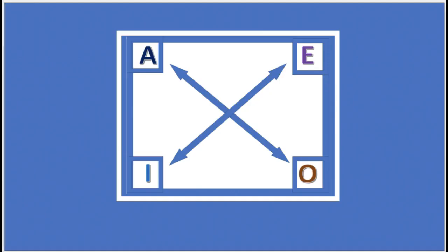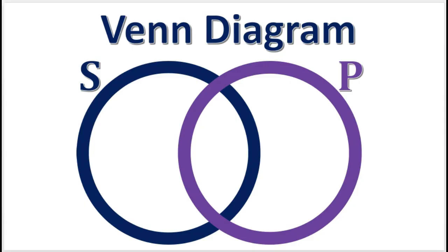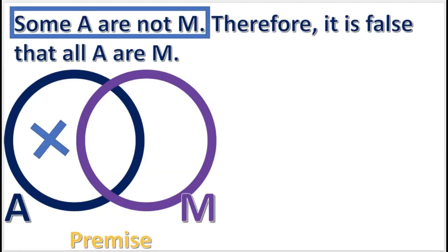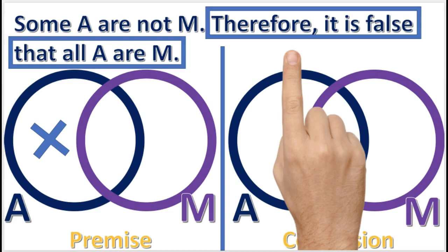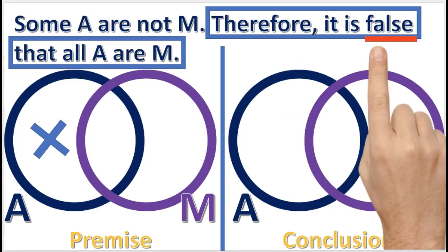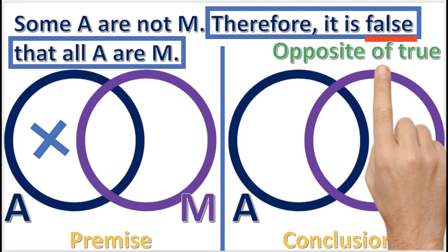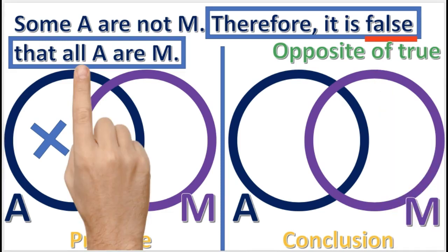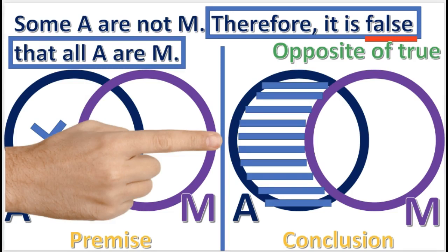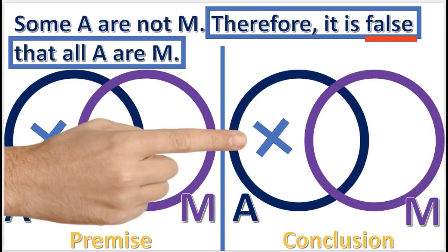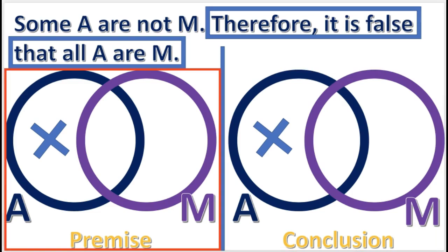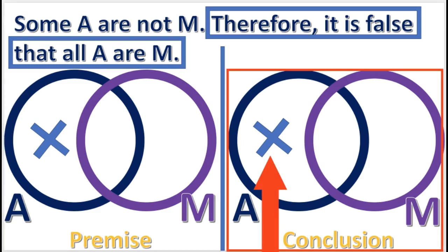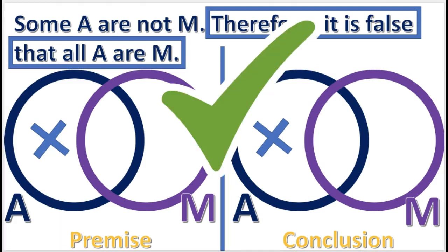Very good job on those practice problems. Now you know how to test an inference using the modern square of opposition. But now let's see how to use the Venn diagram to test an inference. Take a look at this inference. First, we draw a diagram for the premise. Next, we draw a diagram for the conclusion. Since the conclusion asserts that an A statement is false, we do the opposite of what we would do if the statement were true. If 'all A or M' were true, we would shade the left-hand part of the A circle. But since the statement is false, we place an X in this area. Now we look at the diagrams to see if the information in the conclusion diagram is contained in the premise diagram. In the conclusion diagram there's an X in the left-hand part, and since there's an X in the left-hand part of the premise diagram, we know that the inference is valid.